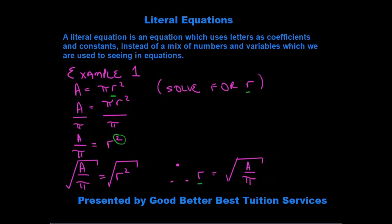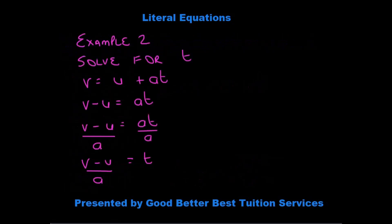We got the r. We've isolated it and we've got it alone. So our answer is r is equal to the square root of a over pi. Let's look at our second example.